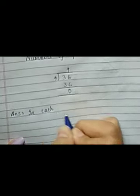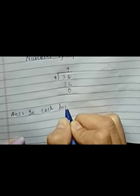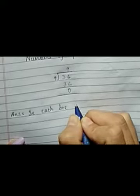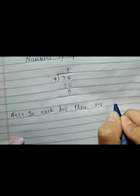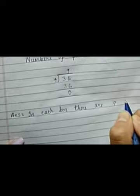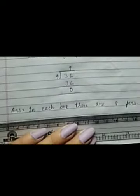Write the answer. In the question, it is asked how many pens are there in each box. We will write: in each box there are 9 pens. When you finish, you will draw a long line.